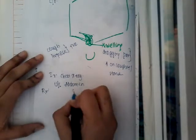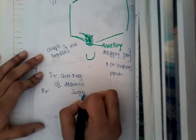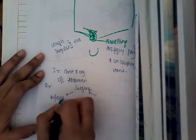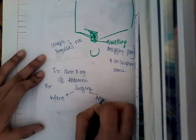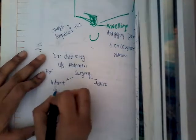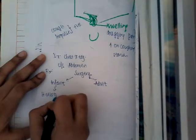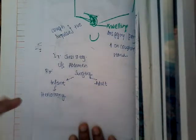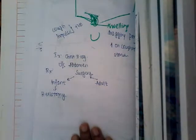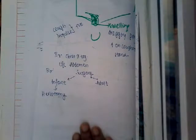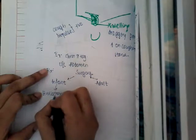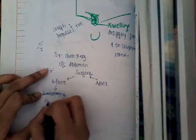The treatment of indirect inguinal hernia is always surgery. In infants, you will just do a herniotomy — where you excise the hernia sac through an inguinal approach. You do not make any stitches or place any mesh; you simply excise the hernia sac.